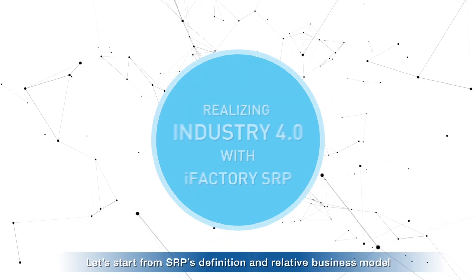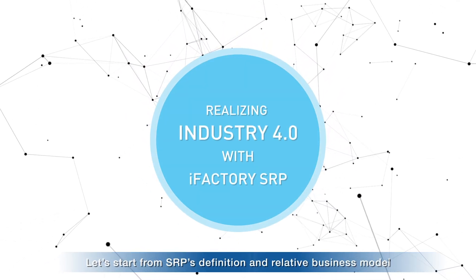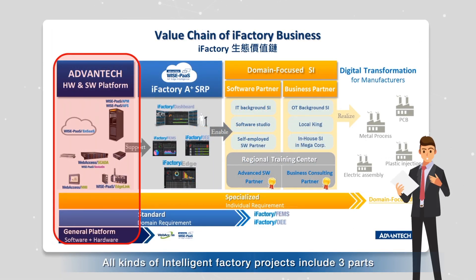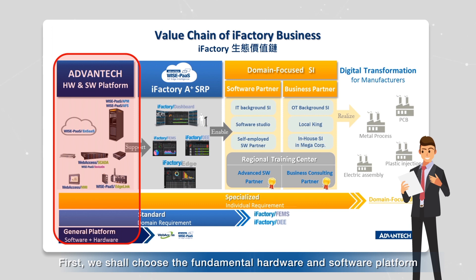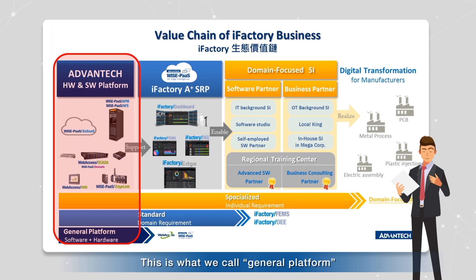Let's start from SRP's definition and relative business model. All kinds of intelligent factory projects include three parts. First, we should choose the fundamental hardware and software platform, data acquisition edge, and data storage platform. This we call the general platform.